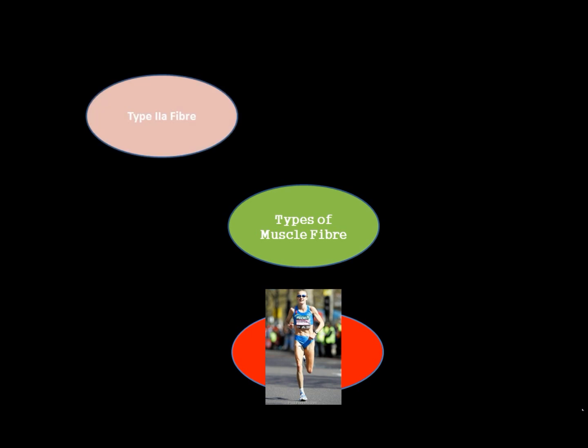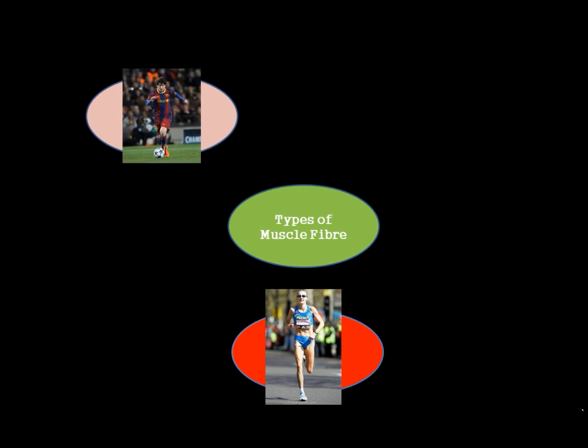Type 2A Muscle Fibres are pink in colour. These are the muscle fibres that we use when we're doing something that's a mixture of both short and long activity, so for example playing a game sport such as football.